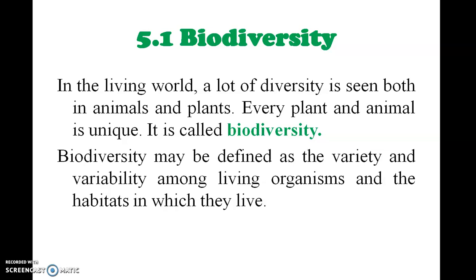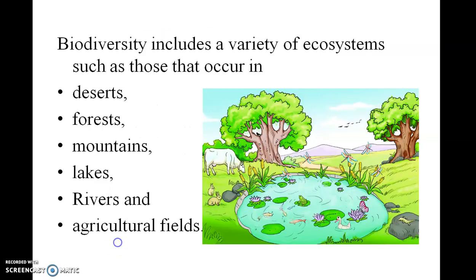There are so many plants and animals in different environments — you can see a lot of animals in the desert and a lot of plants in various climates. Biodiversity includes a variety of ecosystems such as desert, forest, mountain, lakes, rivers, and agriculture field.